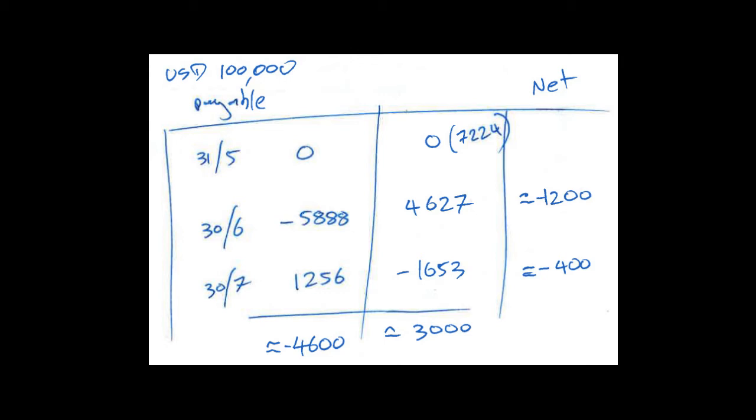If we net it all out, if we were to take the net effect of all of this, zero, about 1,200 negative, about 400 negative, gives you about 4,600, sorry, 1,600, I'll just write that all again, minus 1,600. So instead of making a loss of 4,600, we've made a loss of $1,600 on this.